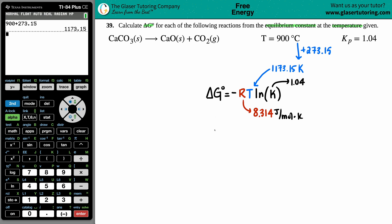We have everything. Let's plug it all in. Delta G equals the negative is in the formula, so 8.314, then I'm going to times by my temp of 1173.15, and then times by my natural log, that's the ln of 1.04.